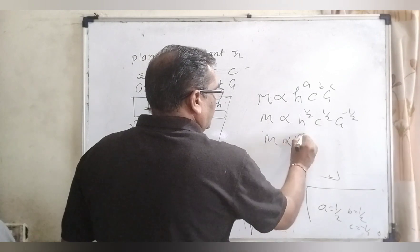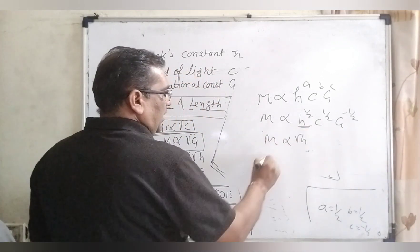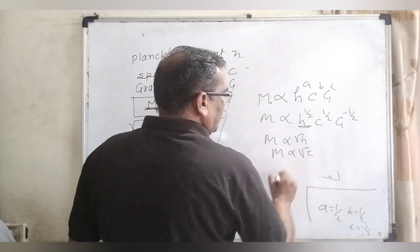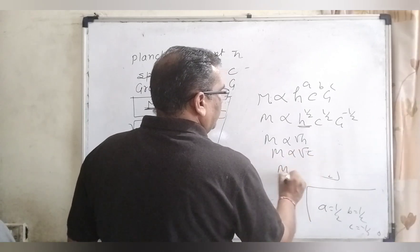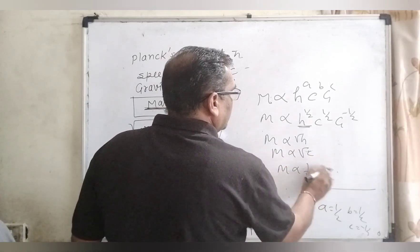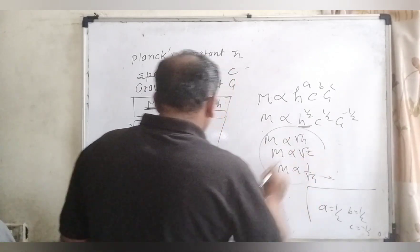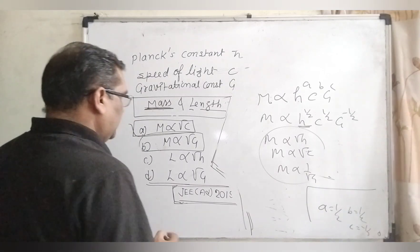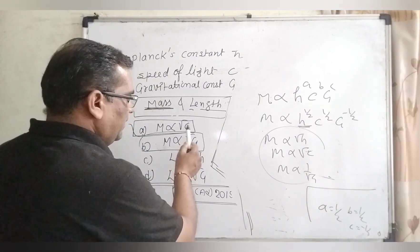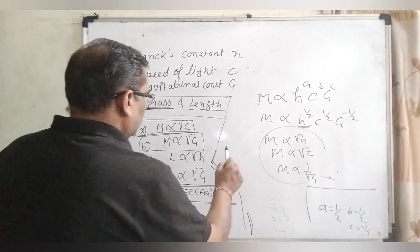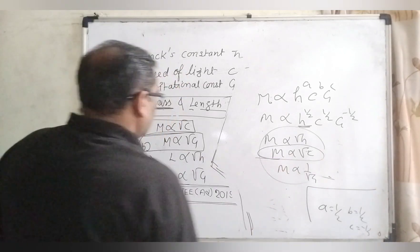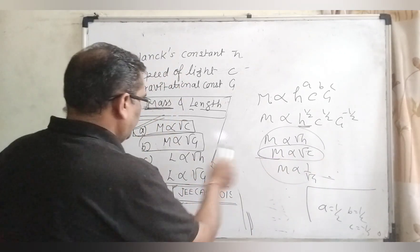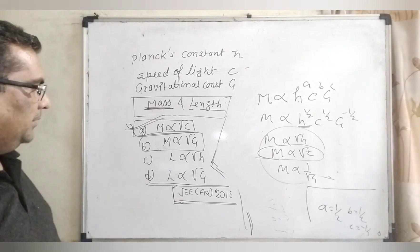M is directly proportional to √h, M is directly proportional to √c, and M is inversely proportional to √G. Looking at the options, option A — M proportional to root c — is matching here. So option A is correct.